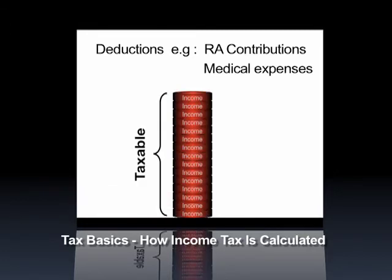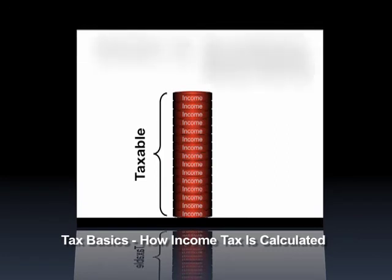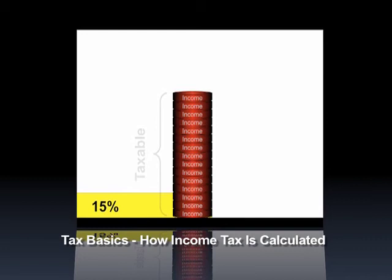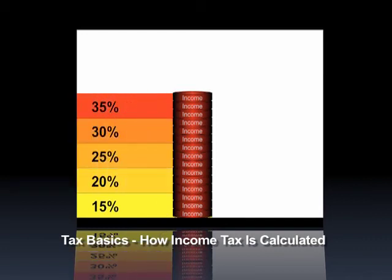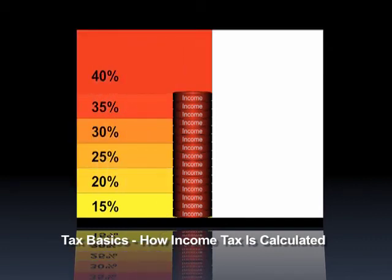Once all of these exemptions and deductions have been removed, you are left with the income that will be used to calculate your tax. The sliding scales on the tax tables are applied to this remaining income, and the tax is calculated.